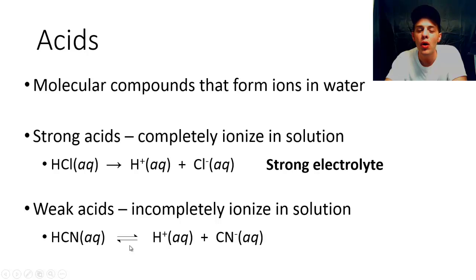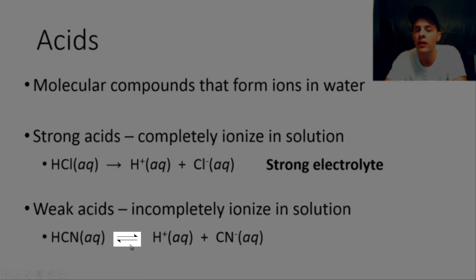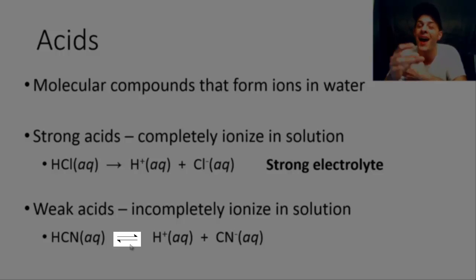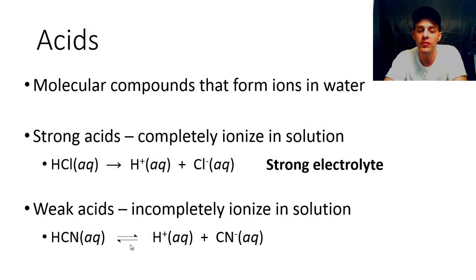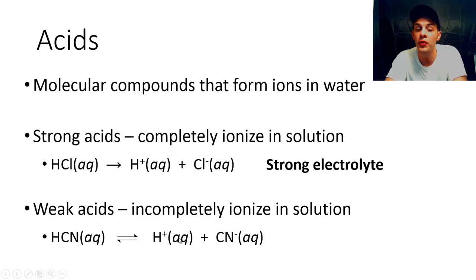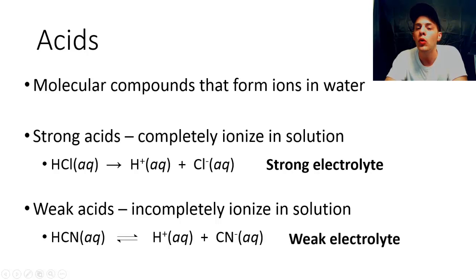Notice that instead of a single-headed arrow, what we have are two half-headed arrows pointing in opposite directions. This type of arrow indicates an incomplete dissociation, meaning you have H⁺ and CN⁻ but you also have some HCN floating around in there too. This would result in what we would call a weak electrolyte solution.